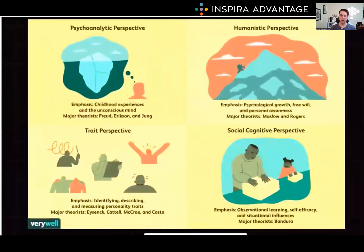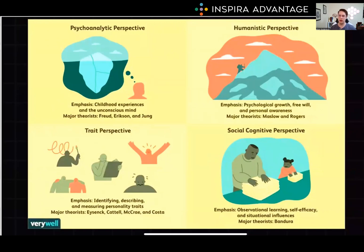First up, the psychoanalytic perspective, which asserts that personality results from unconscious urges and desires. This perspective was pioneered by the likes of Freud, Jung, Adler, and Horney.